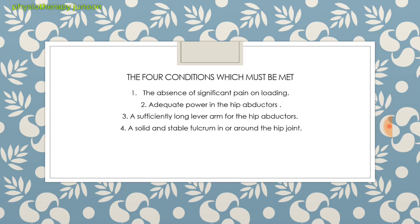Four conditions must be met for correction: absence of significant pain unloading, adequate power in the hip abductors, a sufficiently long lever arm for the hip abductors, and a solid and stable fulcrum in or around the hip joint. The hip joint and its abductor mechanism behave like a class 3 lever, with the effort and load on the same side of the fulcrum. Any pathology of the fulcrum, load, effort, or the lever which binds all three will lead to a positive Trendelenburg gait.